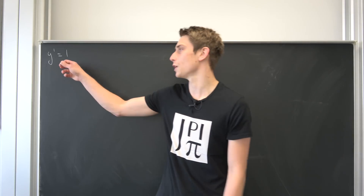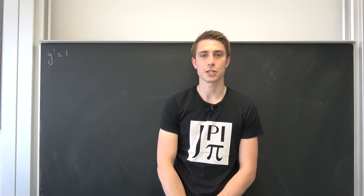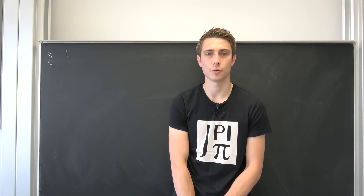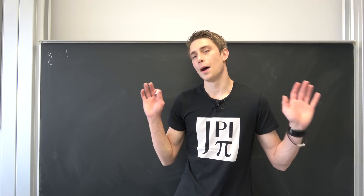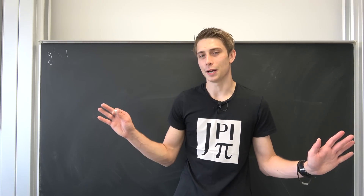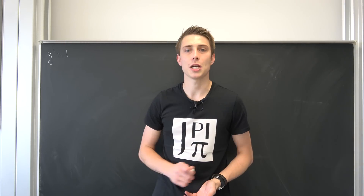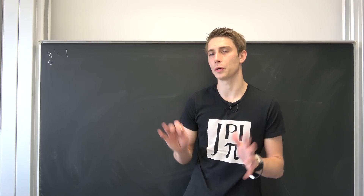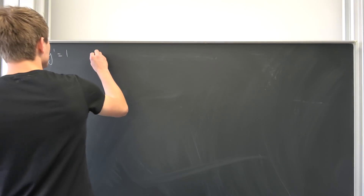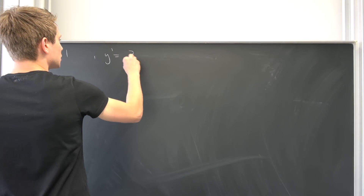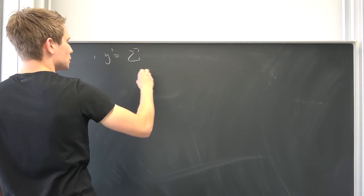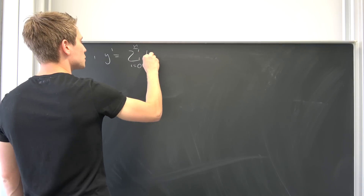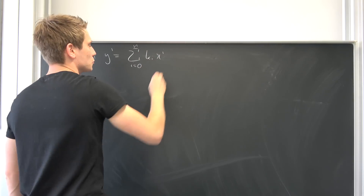We're going to start off with the most difficult differential equation you could ever think of: y prime is equal to 1. It couldn't get any easier, to be honest, except for y prime equal to 0. But never mind. I would like to include some generalizations in the next videos, so let's take a look at the more general case: y prime equal to a polynomial of degree n, so the sum from i equals 0 to n of some coefficients k_i times x to the i.